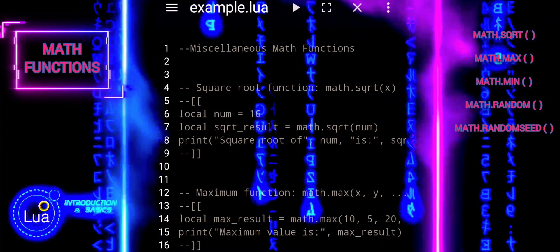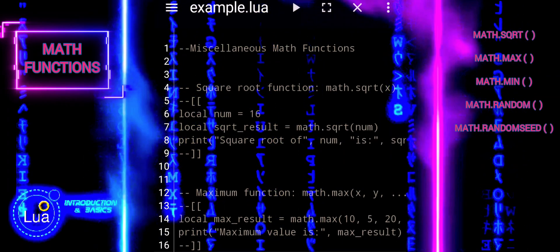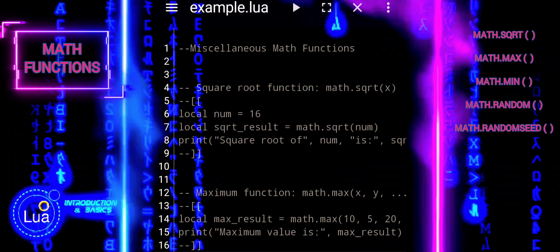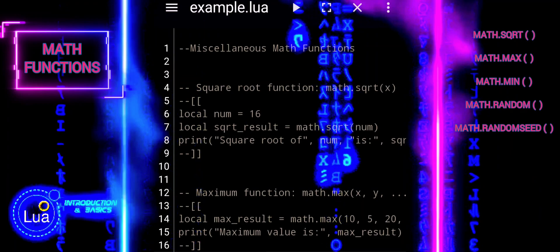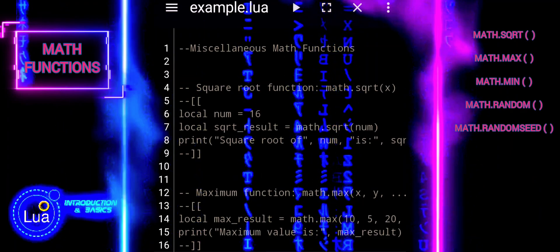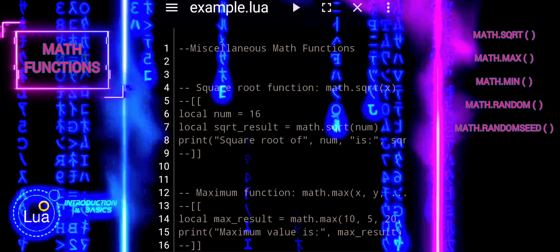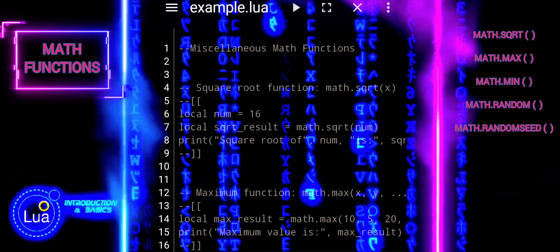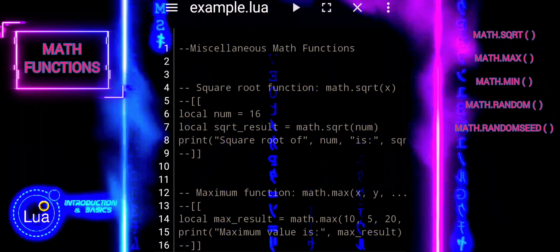Math functions play a crucial role in programming for several reasons. They allow us to perform basic arithmetic operations such as addition, subtraction, multiplication, and division. These operations are fundamental to many programming tasks, including calculations, data manipulation, and algorithm implementation.